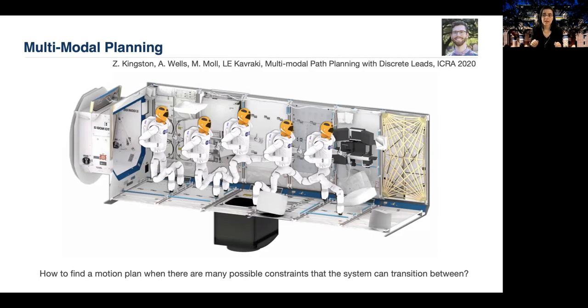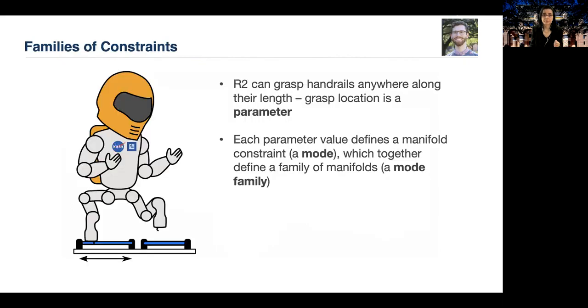Robonaut 2 could grasp any handrail in this module and grasp that handrail anywhere along its length. Each grasp is a different manifold constraint, a different mode that we consider, and R2 must transition constraints, grasping a new handrail and releasing the previous one efficiently. But we need to choose what constraints to transition to in order to plan efficiently for these types of problems, and this can be a challenge. Now, a single manifold constraint corresponds to one specific grasp of the handrail.